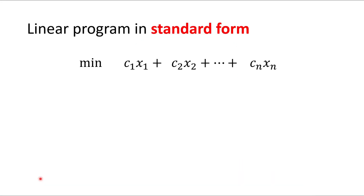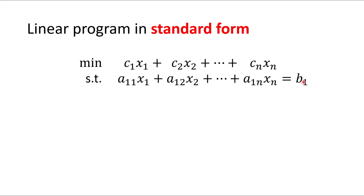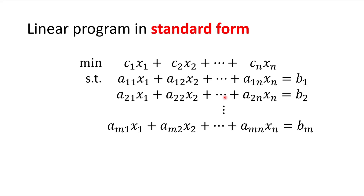In general, we have a linear minimization objective function where each variable x1 through xn has some coefficient c1 through cn. Then we have linear equality constraints where each variable has a coefficient — a11, a12, up to a1n — with right-hand side b1. For a second constraint the right-hand side is b2, with coefficients a21, a22, and so on. If we have m constraints, the coefficients are am1, am2, up to amn with right-hand side bm.